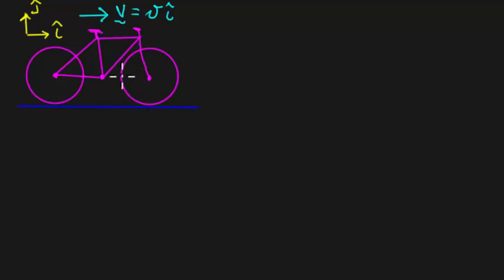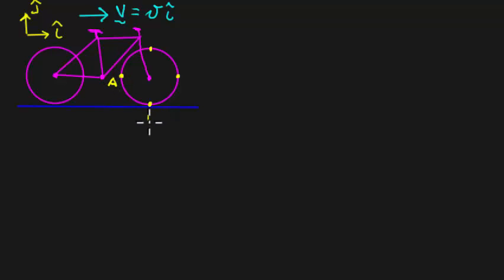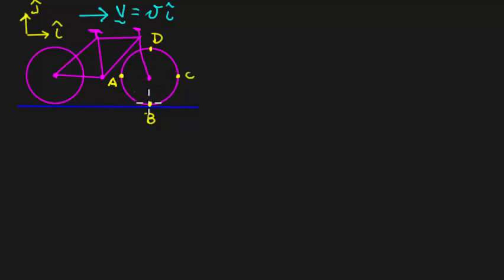Let's take the front wheel and indicate some points. Let's take a point down there, down here, down there, and up here — four points on the bicycle. I'll label them a, b, c, and d. Given that the velocity of the bicycle is v in the i-hat direction, I want to find the velocities of these four points a, b, c, and d on that front wheel.